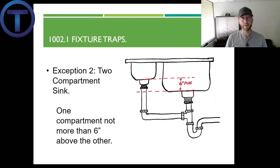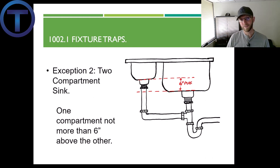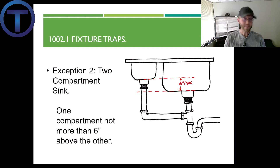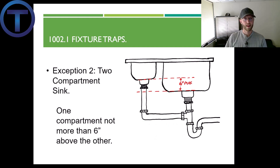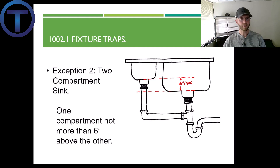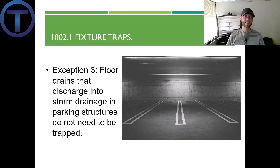Another exception: we said that every fixture gets its own trap. However, it is acceptable to connect multiple compartment sinks together to a single trap. A couple of specifics: they cannot exceed 30 inches in horizontal travel, and any of those compartments cannot be more than six inches above the other compartments. Exception three states that floor drains that discharge into storm drainage in parking structures do not need to be trapped.